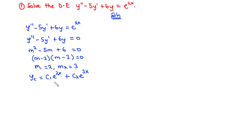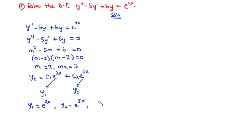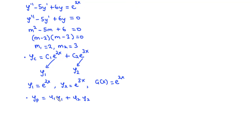At this point, we identify y₁ = e^(2x), y₂ = e^(3x), and g(x) = e^(2x). Since we have found the complementary function, we move on to find the particular integral. The particular solution is given by yp = u₁·y₁ + u₂·y₂. Before we can find u₁ and u₂, we need to find the Wronskian of y₁ and y₂.